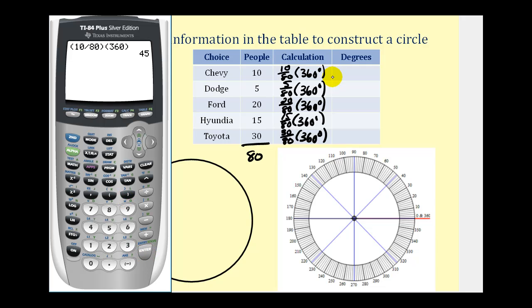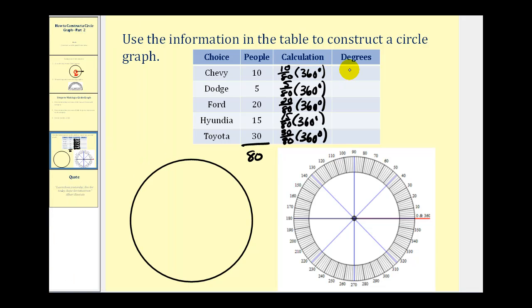So this first category would be 45 degrees. Well 5 eightieths is half as many as the first category. So that would be half of 45. That's 22.5 degrees. Notice the next category is twice the first category. Well 2 times 45 degrees would be 90 degrees.